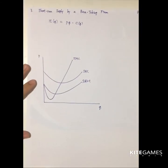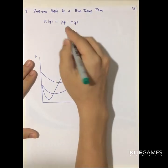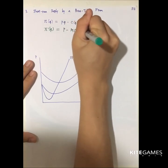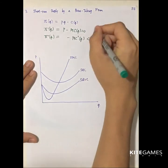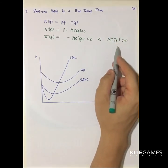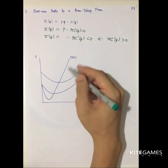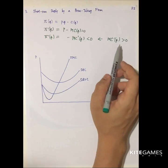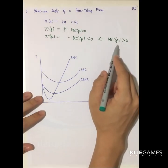Next, let's talk about the short-run supply curve for a price-taking firm. For profit maximization, we set price minus marginal cost equal to zero, and the second order condition requires that −MC'(Q) is less than zero, meaning marginal cost must be an increasing function of output. Since marginal cost is increasing in Q, when the price increases, output increases. Therefore, the short-run marginal cost curve is the supply curve of the firm.